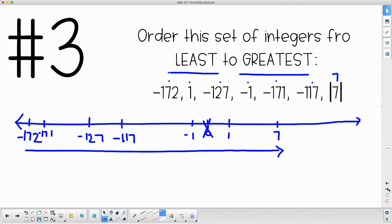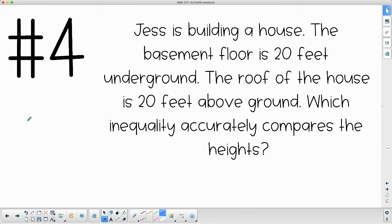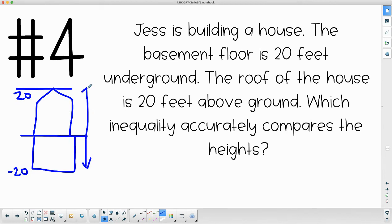Number four says that Jess is building a house. Here's our ground they're building their house on. The basement floor is going to be 20 feet below zero, so here's negative 20. The roof of the house is 20 feet above the ground, so then they build their house and the roof is 20 feet above the ground. Which inequality, using comparing symbols, accurately compares the heights? This is like a number line here. We know our greater numbers will be on the top, the positive ones. The negative numbers, the least ones, will be on the bottom. So you'll write an inequality to compare those two numbers there.